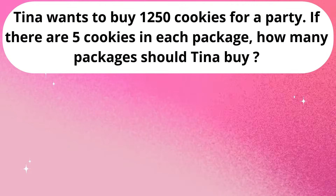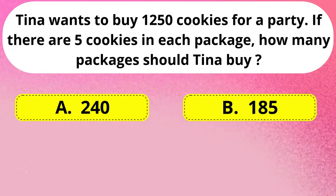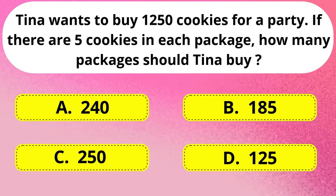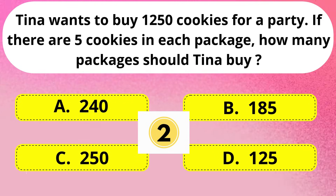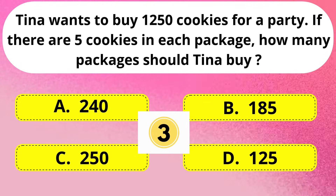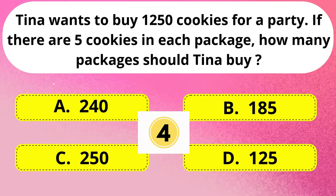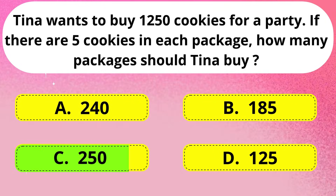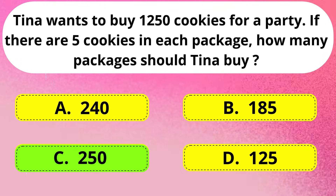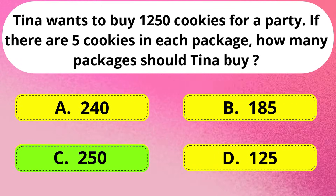Next question. Tina wants to buy 1,250 cookies for a party. If there are 5 cookies in each package, how many packets should Tina buy? The correct answer is Option C: 250.